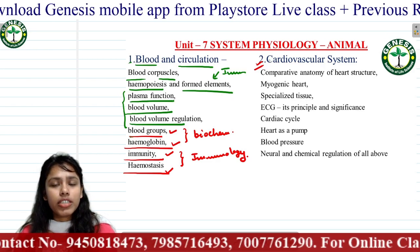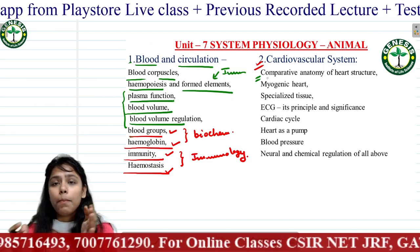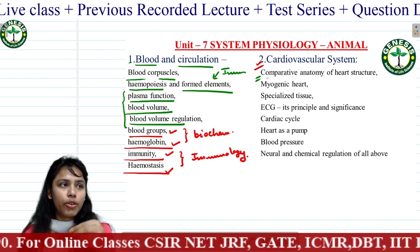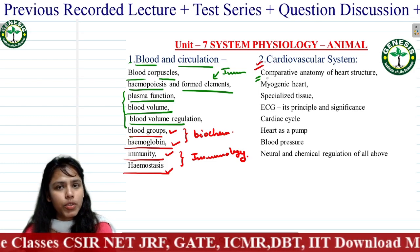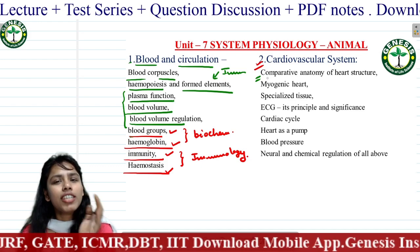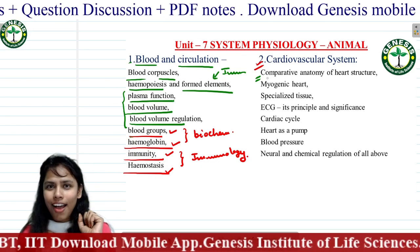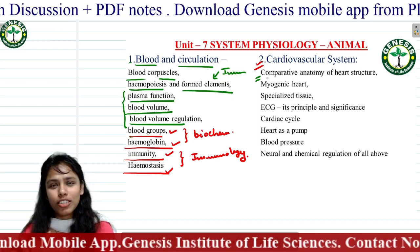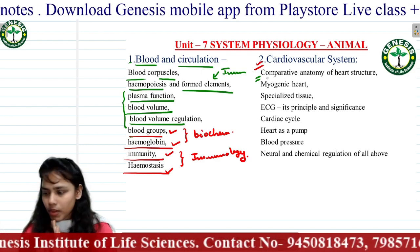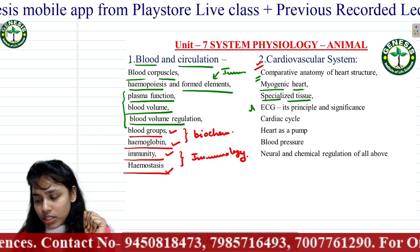Next is the cardiovascular system. We will start from the comparative anatomy of heart structure — basically learning which species have which kind of heart: two-chambered, three-chambered, four-chambered, or five-chambered. You will learn which species have how many chambers by studying their anatomy. You will also learn about the myogenic heart and especially light tissue.